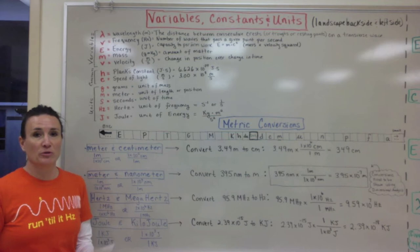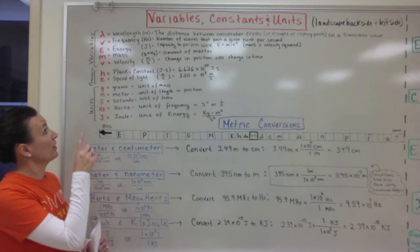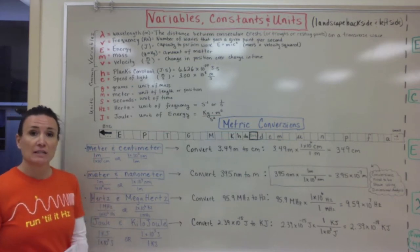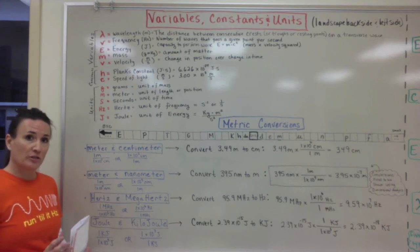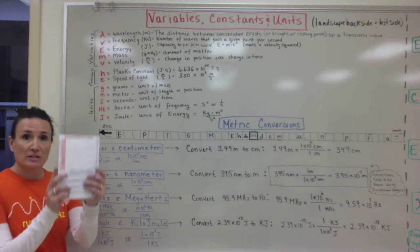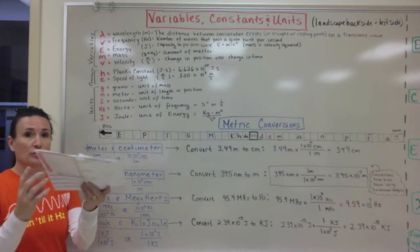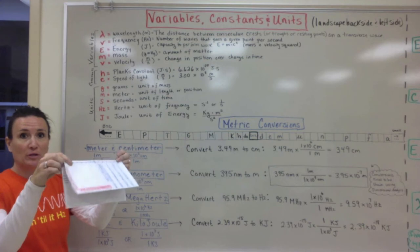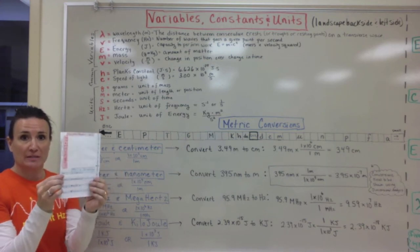So on the back side the most important thing you're going to need to do is have your variables, constants, units, and metric conversions listed out because when we start to do the calculations you'll need all this information to do this correctly. This is on the back side of your foldable, so if you take it and this was the front, you're going to flip it closed and this will be on the back side.